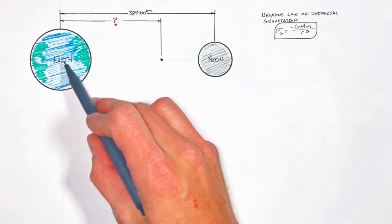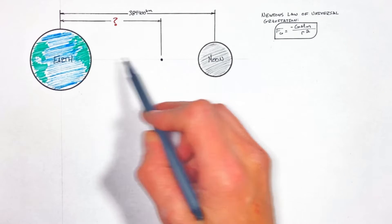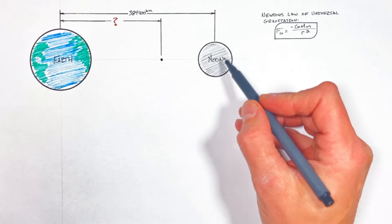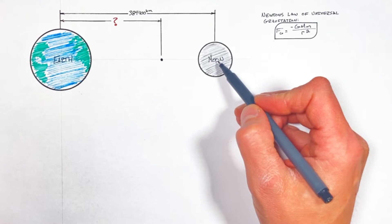In practice what that means is as our little spaceship here gets farther and farther away from the Earth, the force by gravity from the Earth is going to decrease, but as it gets closer to the Moon that force by gravity from the Moon is going to increase.